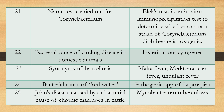Question 24: What is the bacterial cause of red water? Note: the question asks for the bacterial cause, not the protozoal cause. Answer: Pathogenic species of Leptospira, and urine is the most important route of excretion and spread of the disease.